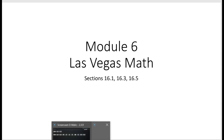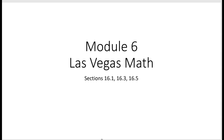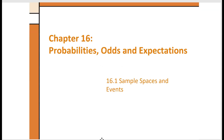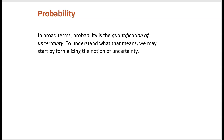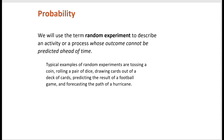Welcome to module 6, Las Vegas math. We're not going to be calculating probabilities, odds, or expectations — we're just going to be understanding the concepts behind them. In broad terms, probability is the quantification of uncertainty. A random experiment describes an activity or process whose outcome cannot be predicted ahead of time — rolling a die, drawing cards, predicting a football game, or forecasting a hurricane. In your project this module, you'll be looking at three different unknown options and picking the one that interests you most, then working with the probabilities used to predict these unknown events.